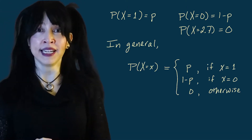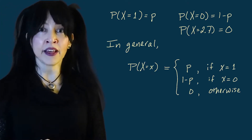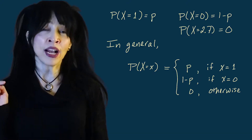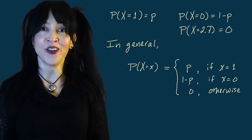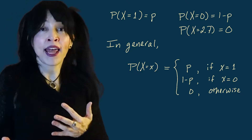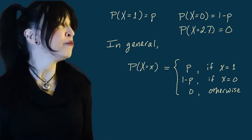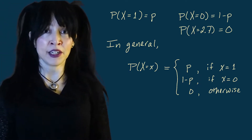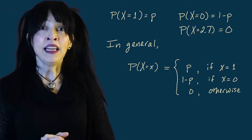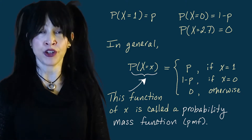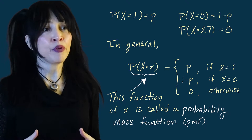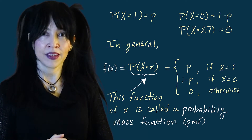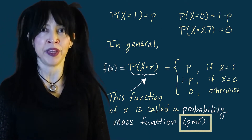Let's write out probabilities as a function. I'm going to look at the probability that the random variable capital X equals some little x, where little x is a variable where I can plug in 2.7, one, or zero. I want the function to give me p when I plug in one, one minus p when I plug in zero, and zero for anything else. This is known as a probability mass function for this random variable. In probability and statistics, we usually denote probability mass functions by f(x), and we use the abbreviation PMF.